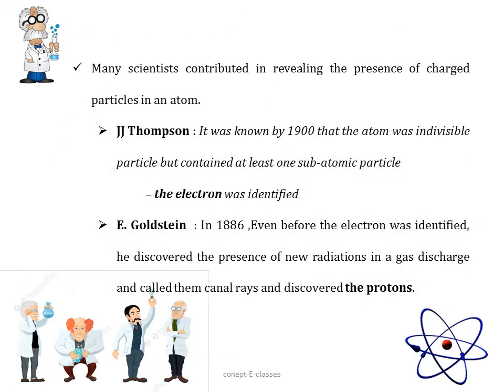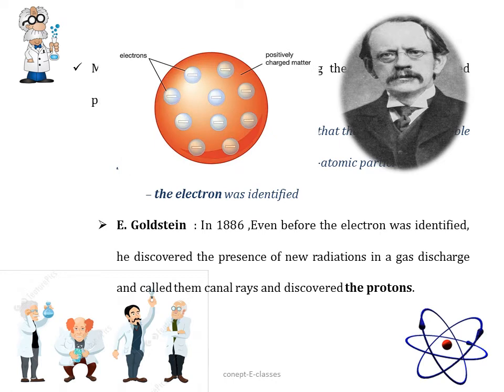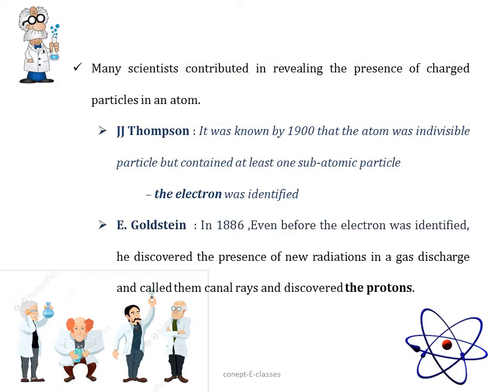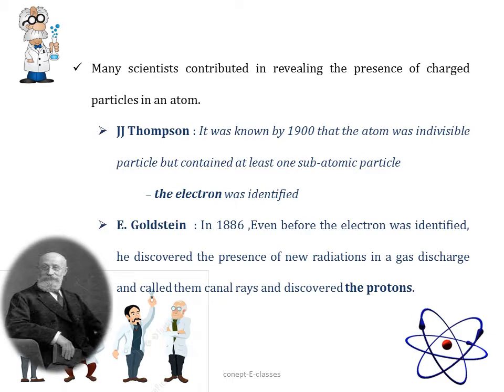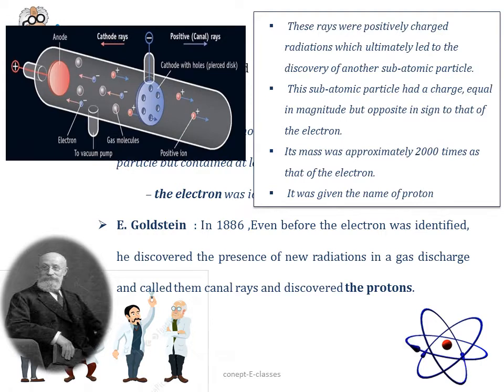Many scientists contributed in revealing the presence of charged particles in an atom. One such scientist was Sir Joseph John Thomson. He discovered that even though the atom was indivisible, it contained at least one subatomic particle called the electron. J.J. Thomson carried out a cathode ray experiment in which he observed a stream of negatively charged particles coming out of the cathode towards the anode. He called this negatively charged particle the electron. Another such scientist was Eugene Goldstein. In 1886, even before the electron was identified, he discovered the presence of protons.